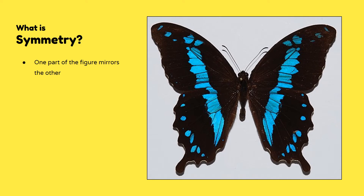When an object is symmetrical, that means one part of the image can be perfectly reflected in, or mirrors, the other. It's very important for us to know where our mirror line is, or where one part of the figure mirrors the other perfectly. In this picture, along where do you think one part would perfectly mirror the other? Our figure is symmetric along this line. We call this our line of symmetry. So we would say that our image has one line of symmetry.